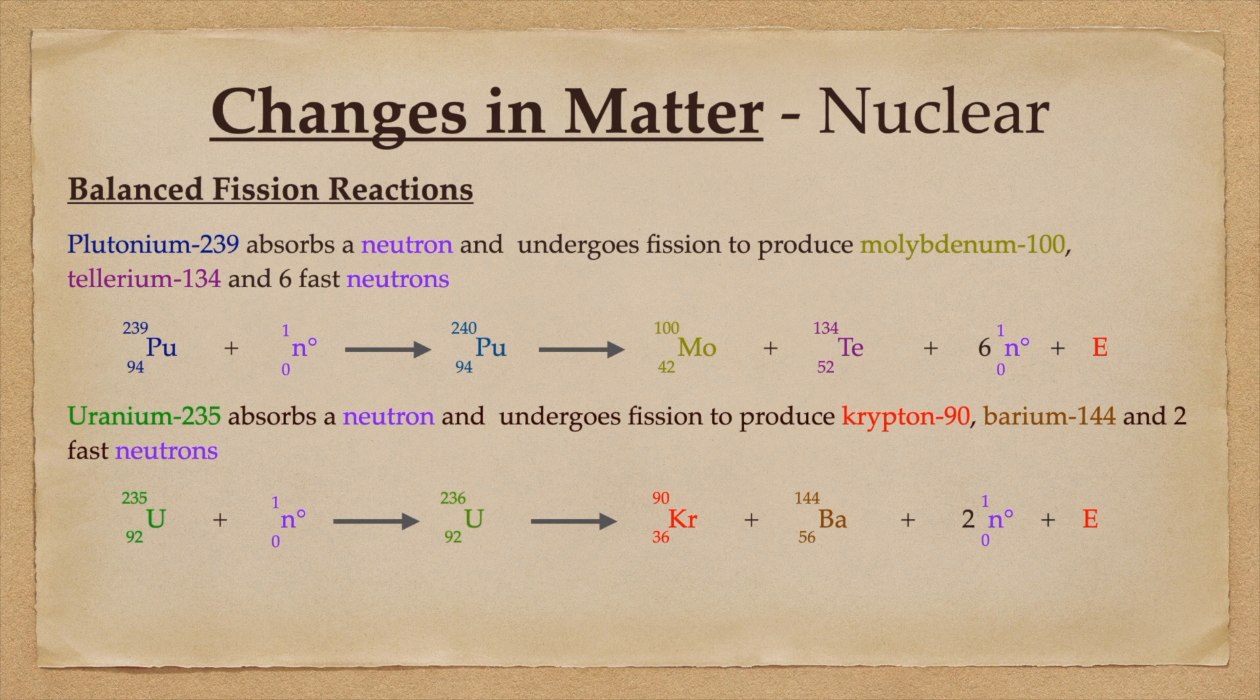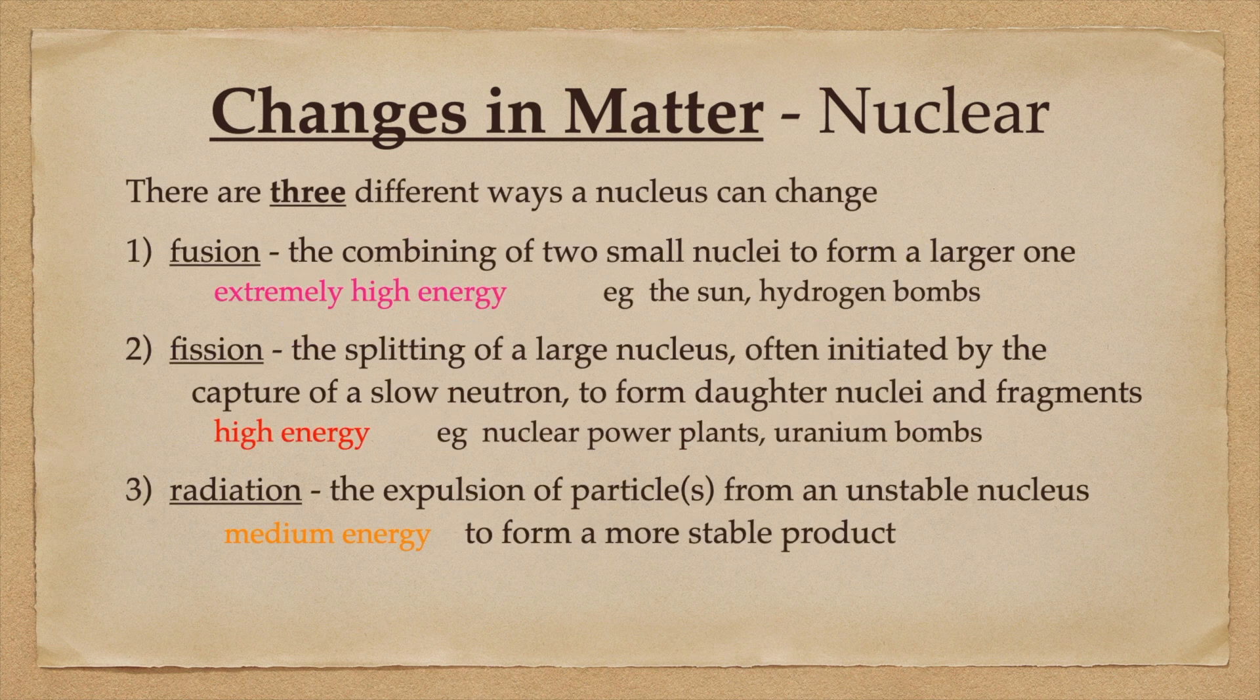It should be noted that when uranium-235 fizzes there are many possible decays, this is just one of the examples. Once again, there are three different ways a nucleus can change: fusion, the combining of two smaller nuclei to form a larger one, fission, the splitting of a large nucleus to form two daughter nuclei, or radiation.